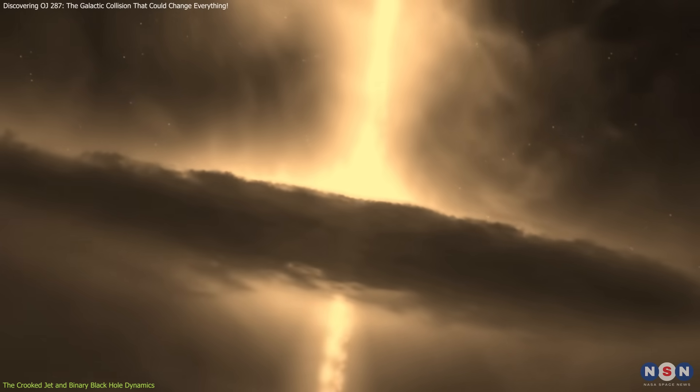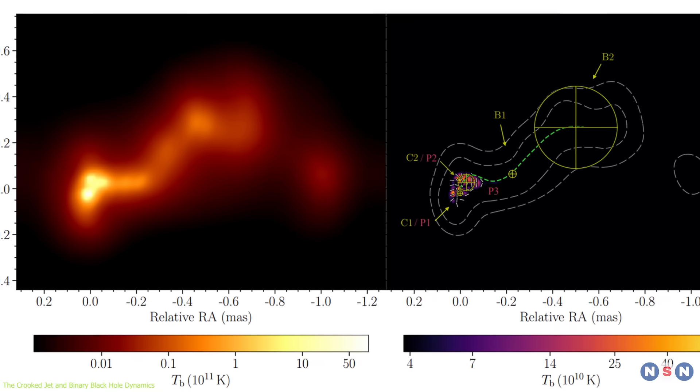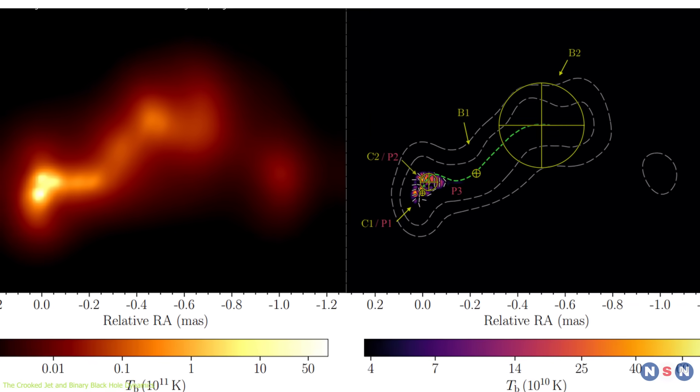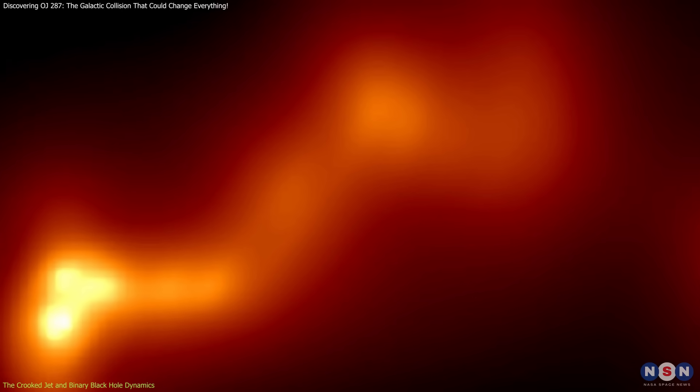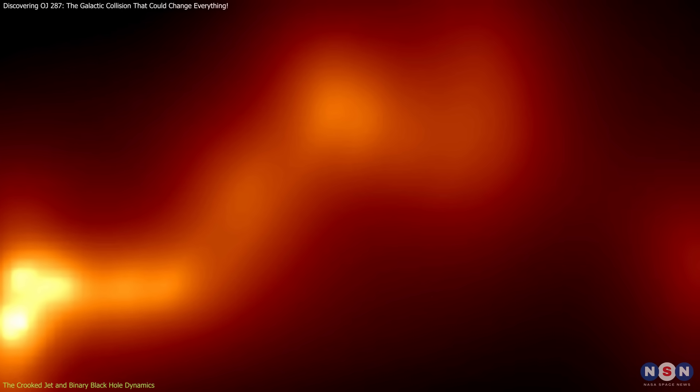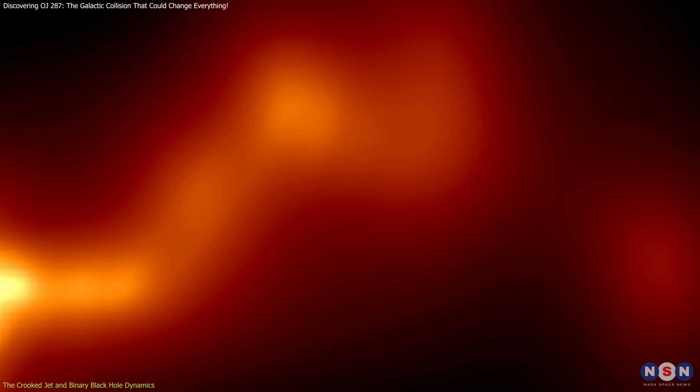Unlike the straight jets typically observed in blazars, the jet from OJ 287 has a pronounced curvature, bending and precessing around its axis. This bizarre phenomenon was captured in stunning detail through high-resolution radio wavelength images.